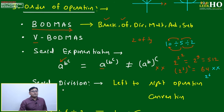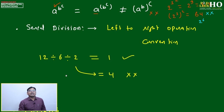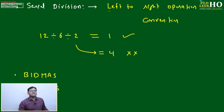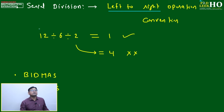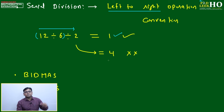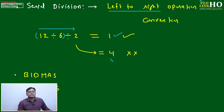For serial division, always follow left to right — the same direction as serial exponentiation follows top to bottom. For example: 12 ÷ 6 ÷ 2. Always follow left to right: first 12 ÷ 6 = 2, then 2 ÷ 2 = 1. That is correct. Do NOT go right to left: 6 ÷ 2 = 3, then 12 ÷ 3 = 4 — that is wrong.